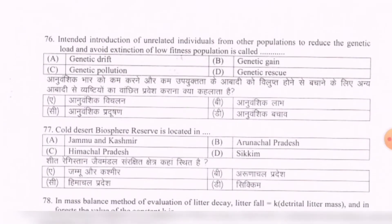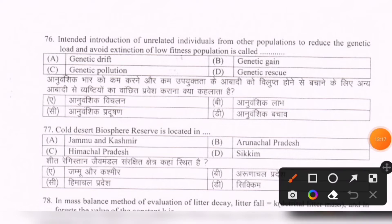Next question: The intended introduction of unrelated individuals from other populations to reduce the genetic load and avoid extinction of a low-fitness population is called — options are: genetic drift, genetic gain, genetic pollution, genetic rescue. The correct option is D — genetic rescue.